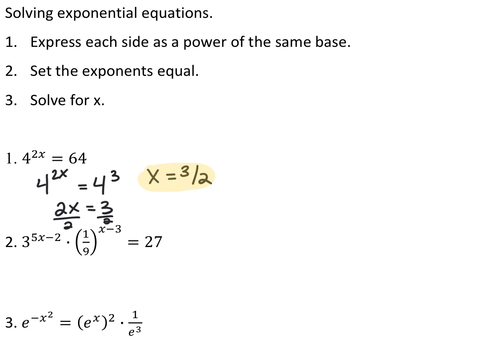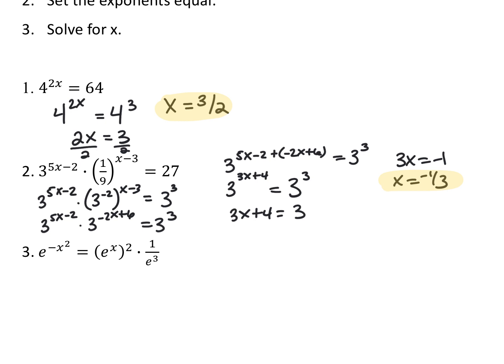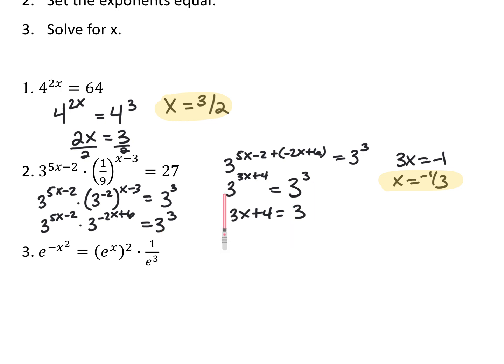Try 3 to the 5x minus 2 times 1 ninth to the x minus 3 equals 27. I want to write everything in terms of base 3. 1 ninth is 3 to the negative 2 power, and 27 is 3 cubed. Raising a power to a power means I multiply — distributing the negative 2 gives 3 to the negative 2x plus 6. Multiplying two things with the same base means I add the exponents, so the left side becomes 3 to the 3x plus 4, and the right side is 3 cubed. Setting exponents equal and solving gives x equals negative 1 third.